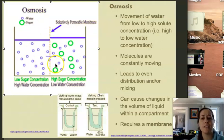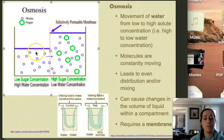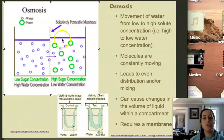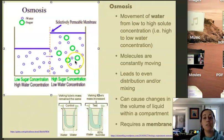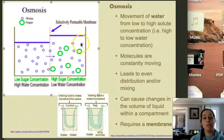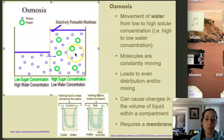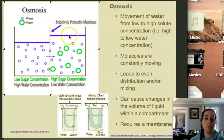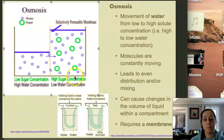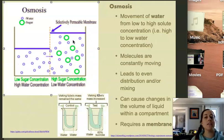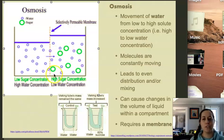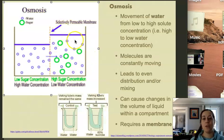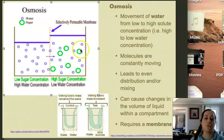Here there is a membrane in between the left and the right side of the beaker. Instead of having the sugar molecule move so that we have a more equal concentration between the left and the right, we actually see the water move because the sugar molecule cannot cross the membrane. So it's almost like thinking about the concentration of water molecules as opposed to the concentration of whatever is dissolved in the water — in this case, sugar.